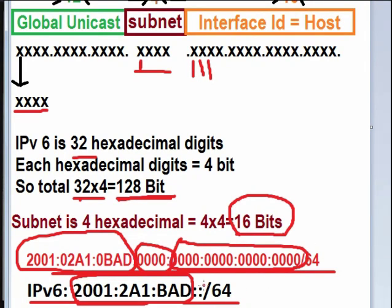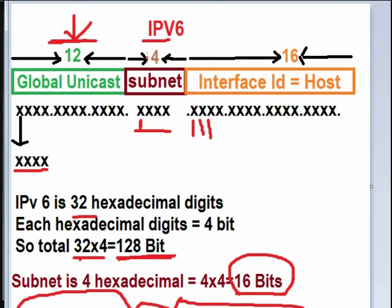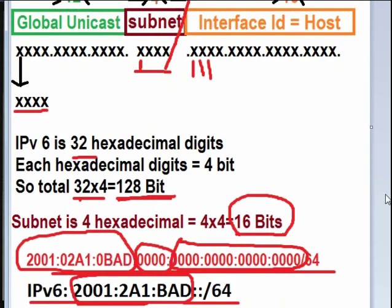Now about the /64. 64 means this 12 plus 4 is equal to 16, and 16 into 4 is equal to 64. This 64 is the prefix — like we had in IPv4 with 255.255.255 masking. And it is written as /64 prefix.